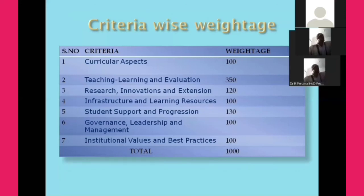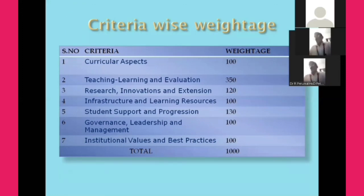The criteria-wise weightage is as follows: Criteria 1, Curricular Aspects, 100 marks. Criteria 2, Teaching, Learning and Evaluation, 350. Criteria 3, Research, Innovation and Extension, 120. Criteria 4, Infrastructure and Learning Resources, 100. Criteria 5, Student Support and Progression, 130. Criteria 6, Governance, Leadership and Management, 100. Criteria 7, Institutional Values and Best Practices, 100. Total mark is 1,000.